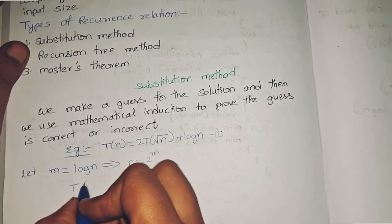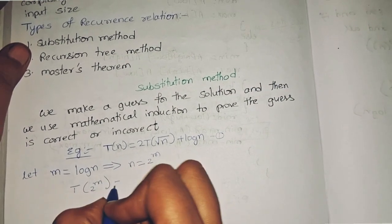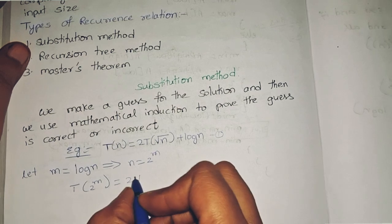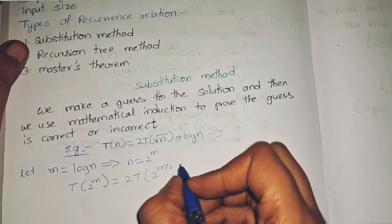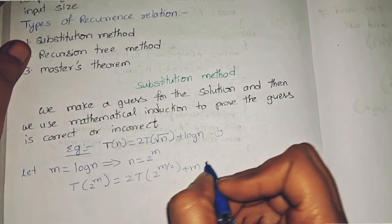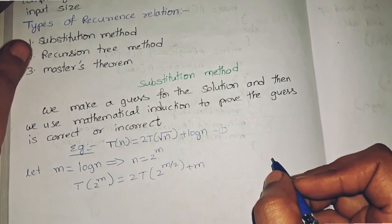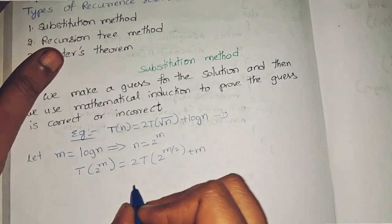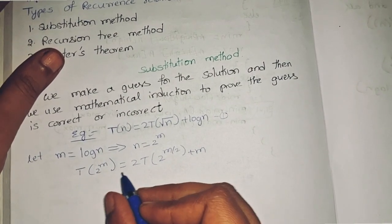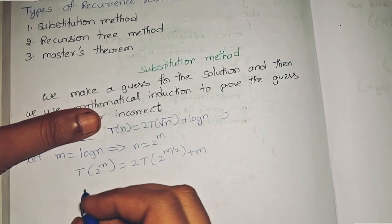So T(2^m) = 2T(2^(m/2)) + m. We will rename s(m) = T(2^m), so we consider the 2^m as s(m).